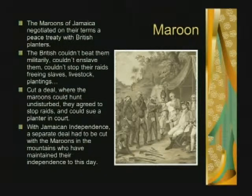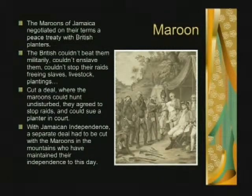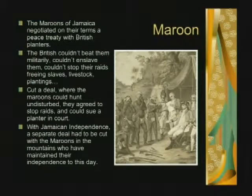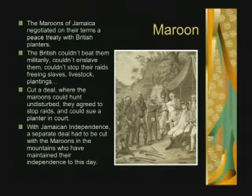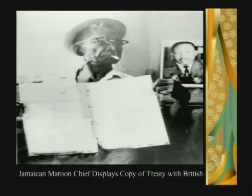The problem maroons now face is dealing with multinationals prospecting on their lands for aluminum — for example, Alcoa. How do you attack a multinational? If you kill Bill Gates, Microsoft doesn't stop. Multinationals are not nation states, but they have the power of national governments, especially in the United States where they're considered people. This is a 20th century Jamaican Maroon Chief displaying a copy of the treaty with the British.